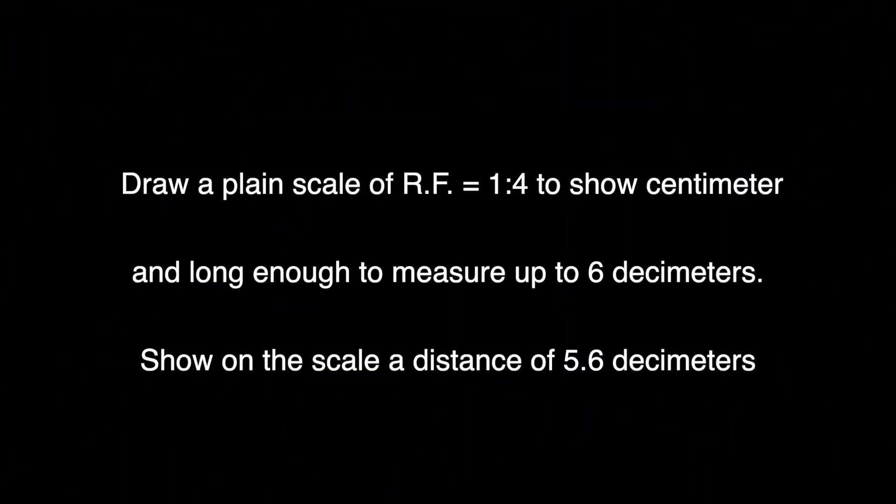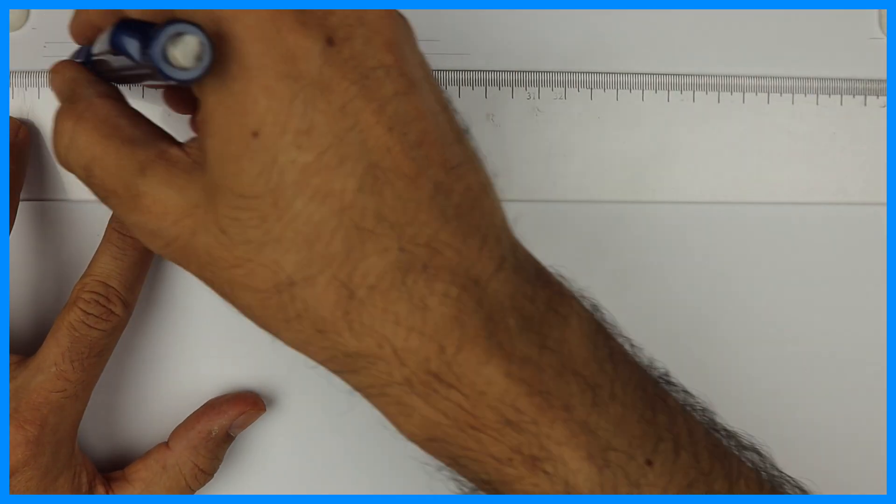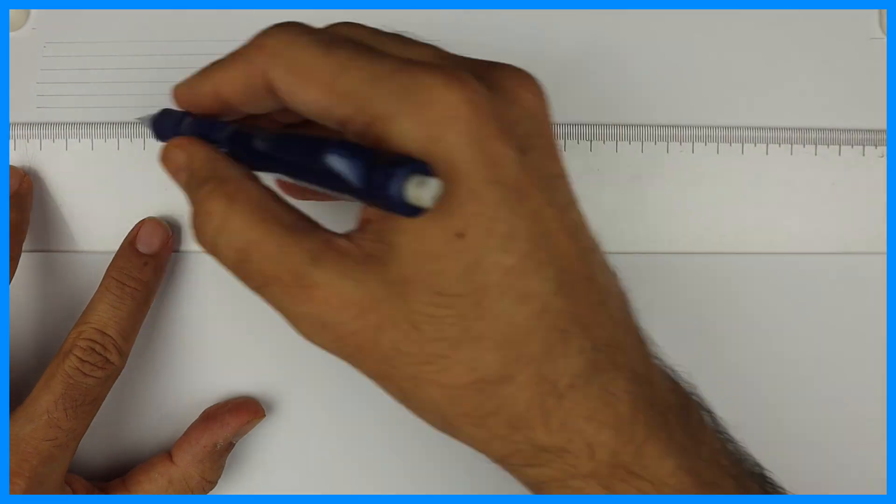Welcome to technical drawing. Today we are going to draw a plain scale of RF 1 is to 4 to show centimeter and long enough to measure up to 6 decimeters. Show on the scale a distance of 5.6 decimeters. So first we will draw 5mm guideline like this.